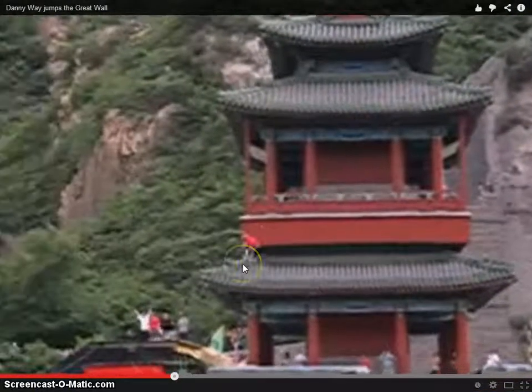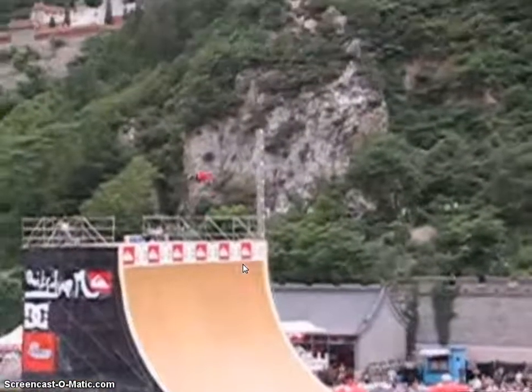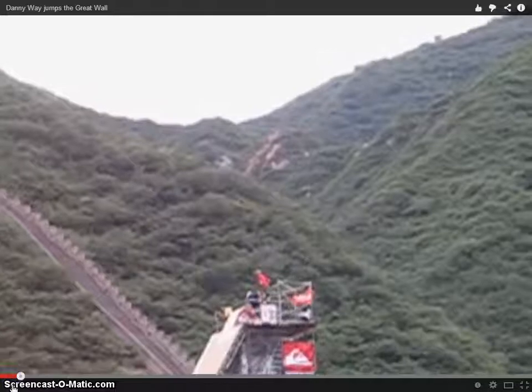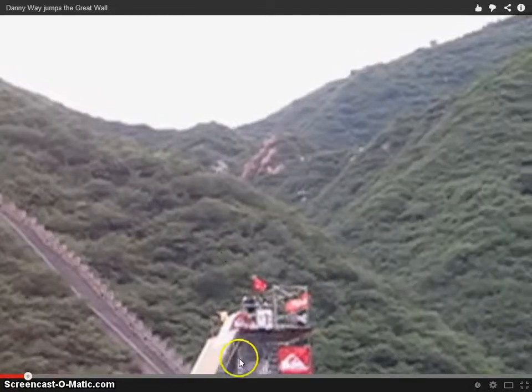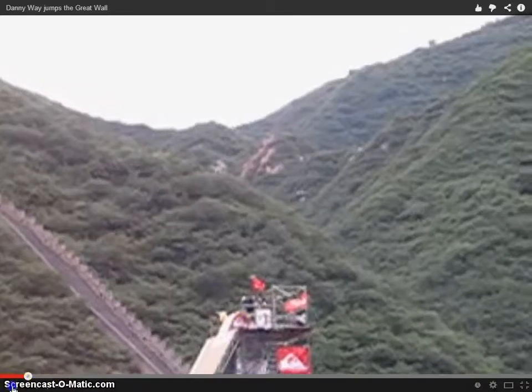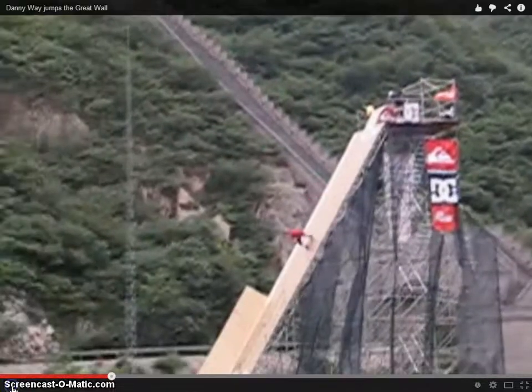And so as he jumps over the Great Wall, he has all kinds of different energies being converted from one to the next. We go back to the top, we know right now his velocity is zero, so his kinetic energy is zero. But he's very high off the ground, so we know that he has potential energy there, gravitational potential. And as he moves down the ramp, he's gaining kinetic and he's losing gravitational.